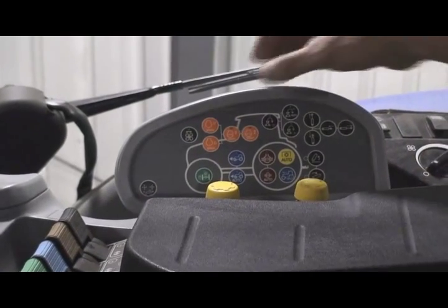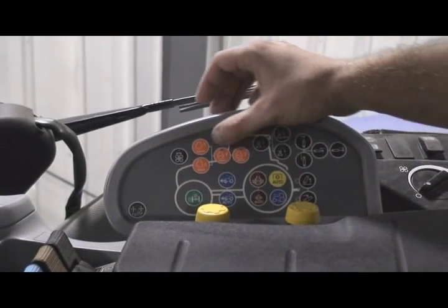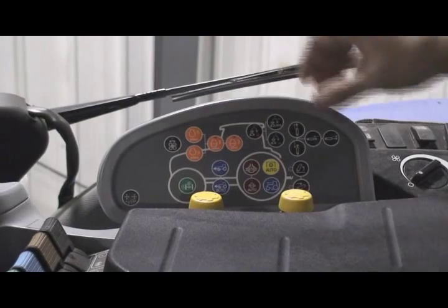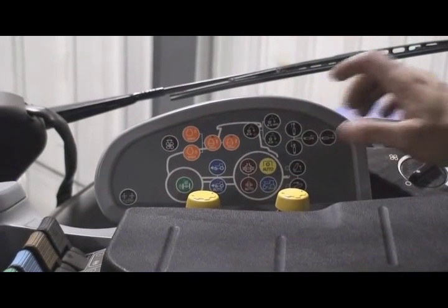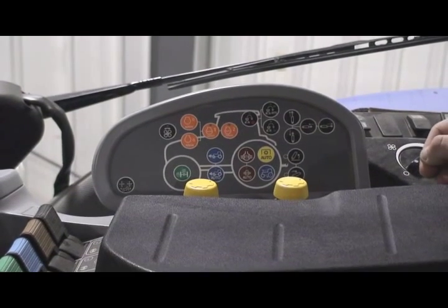All the orange functions here are related to our engine. Anything in black is related to the rear of our tractor, which is our remotes and custom headland management.